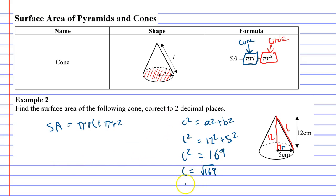l = 13. We can put that in our formula: π × 5 × 13, plus π × 5².